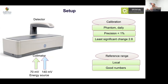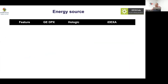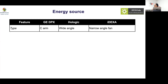The reference range should ideally be local with good numbers, but unfortunately we do not have good data for Indian children, so we rely on western databases. The most common machines available are GE and Hologic. There is also a newer GE version called iDXA which provides somewhat more information.